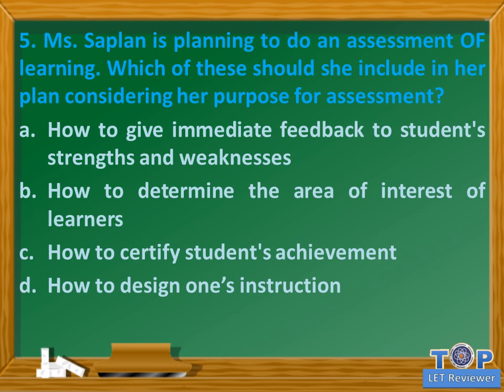Question number five: Miss Saplan is planning to do an assessment of learning. Which of these should she include in her plan considering her purpose for assessment? A. How to give immediate feedback to students' strengths and weaknesses, B. How to determine the area of interest of learners, C. How to certify students' achievement. Answer: C. How to certify students' achievement.